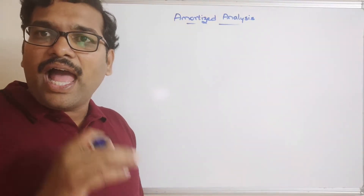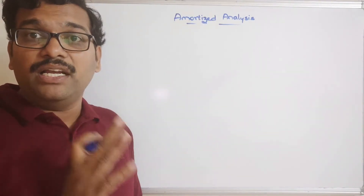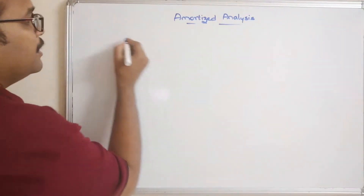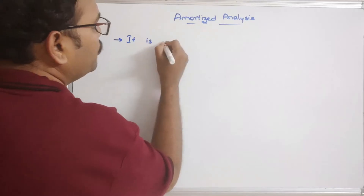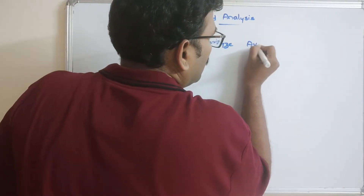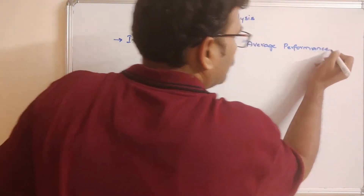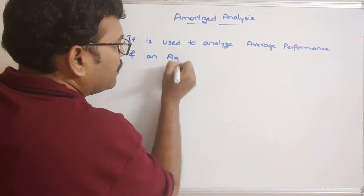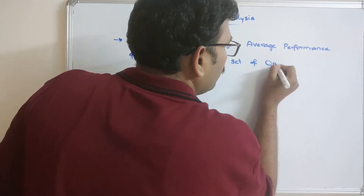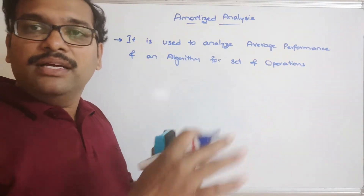Coming to amortized analysis, this is mainly used to analyze the average performance of an algorithm for a set of operations. Basically, it finds the average time complexity for a set of operations, calculating the average cost for all those operations.